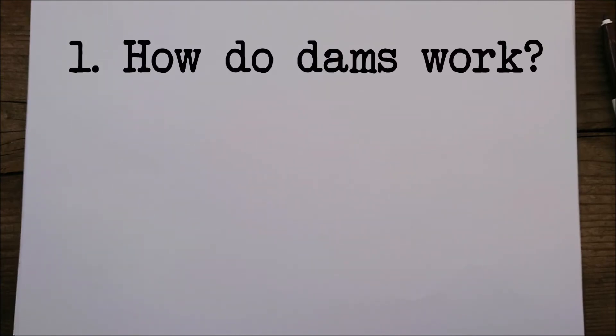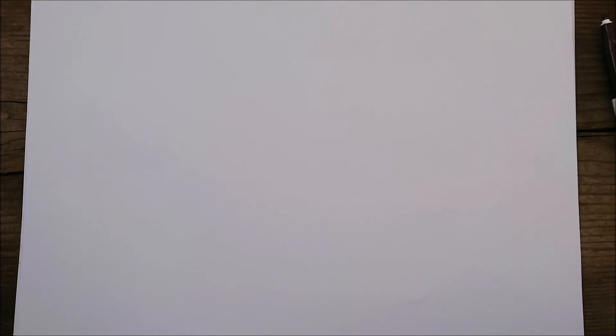One: How do dams work? Dams work by trapping the flow of the river and building up a large reservoir behind the dam. This means that you can control the flow of water further downstream.